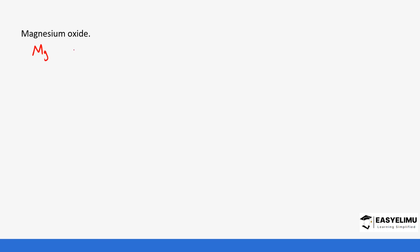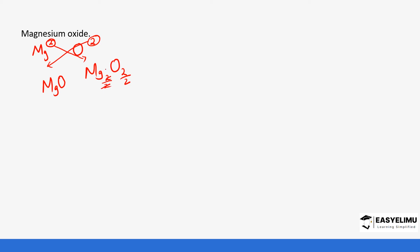Magnesium oxide: the formula for magnesium is Mg, oxygen is O. Magnesium has a valency of two and oxygen has a valency of two. Crisscross the charges - this gives Mg2O2, but these twos can be cancelled out. Cancel to form one and one. It becomes MgO - we don't write the ones - so MgO is our final answer.